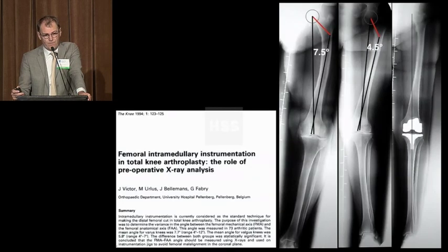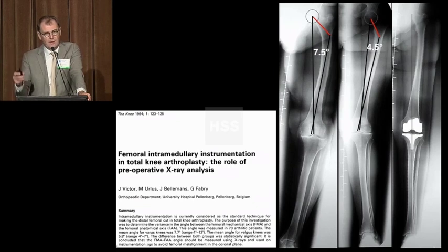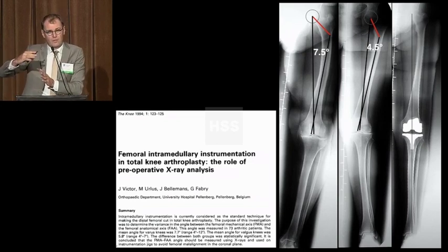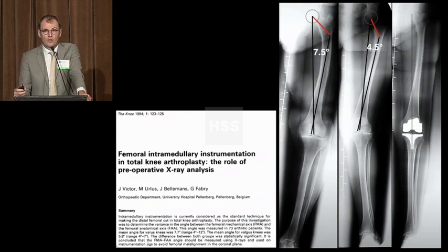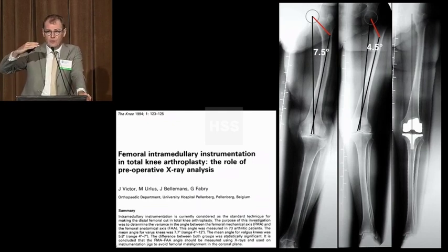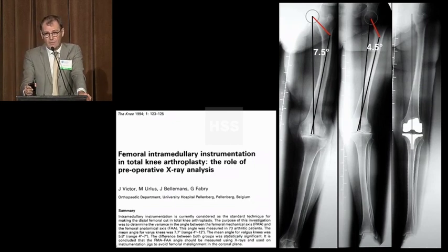This is an old paper I published in 1994, where we looked at the angle between the mechanical and the anatomic axis of the femur and found it to be differential. In varus knees there is almost always a varus position of the femoral neck, so the angle is wider than in valgus patients. We advocated in that paper to fine-tune your distal valgus cut on the femur in order to always go for a neutral alignment.